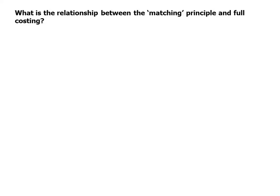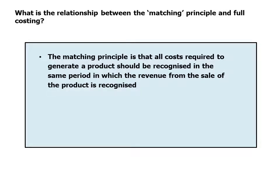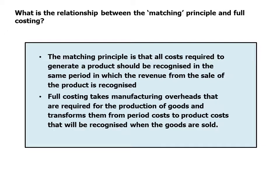What is the relationship between the matching principle and full costing? The matching principle is that all costs required to generate a product should be recognised in the same period in which the revenue from the sale of the product is recognised. Full costing takes manufacturing overheads that are required for the production of goods and transforms them from period costs to product costs that will be recognised when the goods are sold.